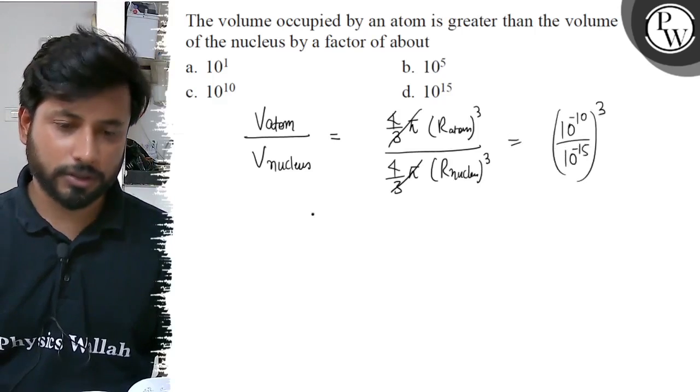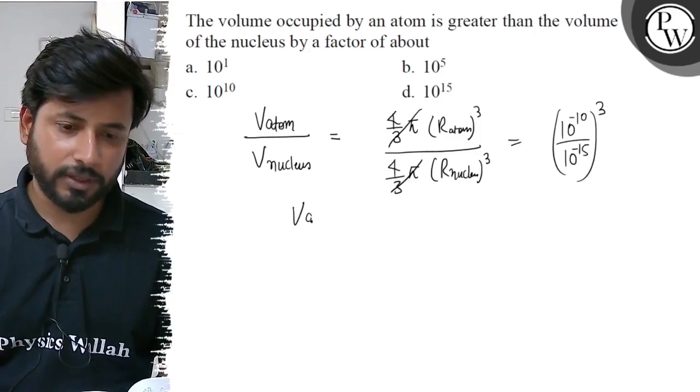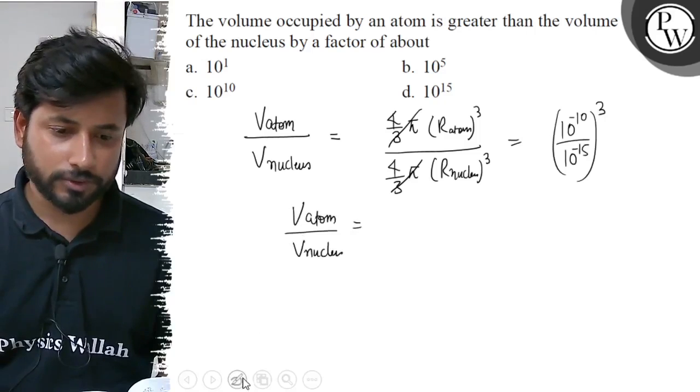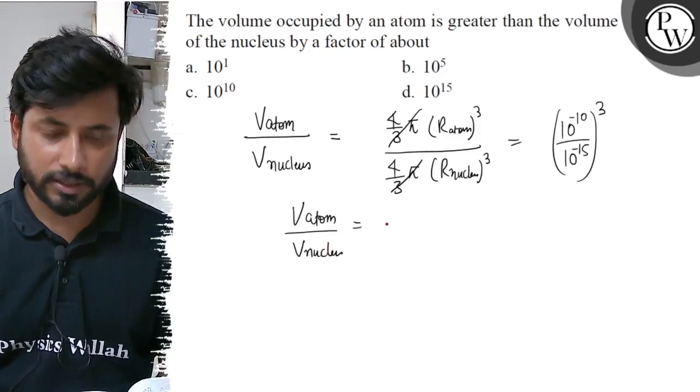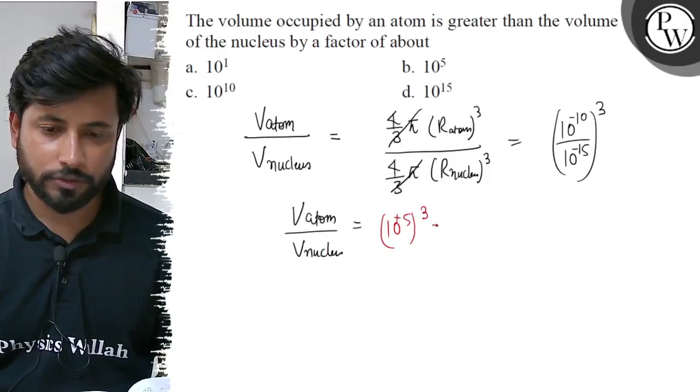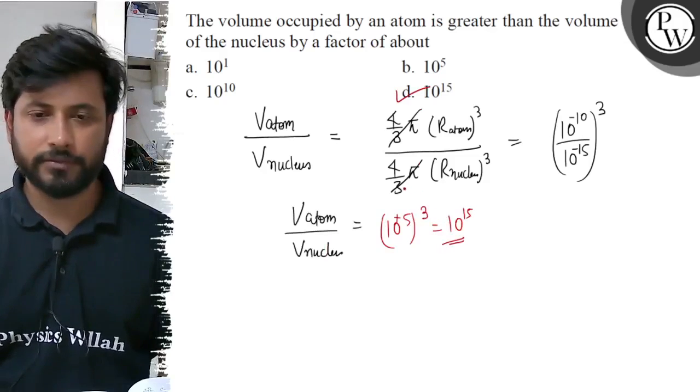Taking the ratio and cubing, we get v atom upon v nucleus equals, when we solve this we get 10 to the power plus 5 cubed, or rather 10 to the power 15. So the final answer is option D, 10 to the power 15. Best of luck.